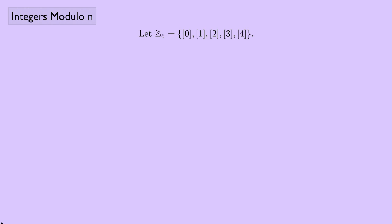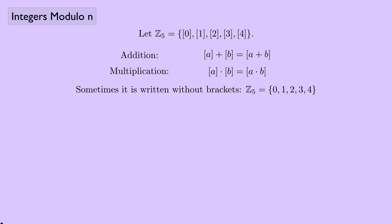Looking at the equivalence classes 0, 1, 2, 3, 4 under congruence mod 5, I'll collect them into a set called ℤ₅. We have addition and multiplication operations on these equivalence classes, forming a new algebraic system. People sometimes write ℤ₅ = {0, 1, 2, 3, 4} without brackets, since writing them around every number gets cumbersome, as long as it's understood we're talking about equivalence classes.